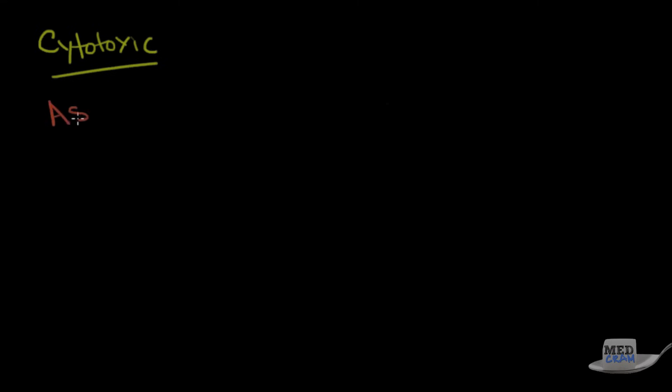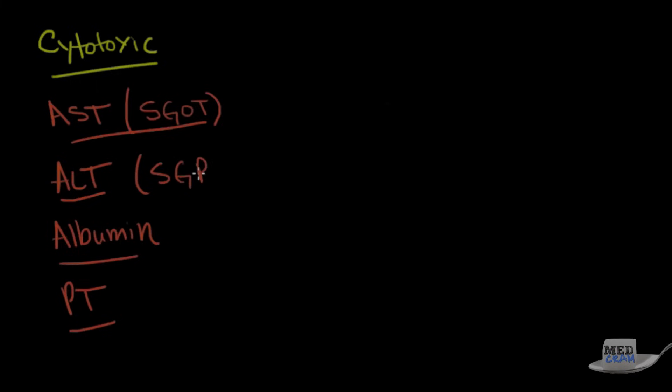Well, the first one is the AST. This is also known as the SGOT. This enzyme is actually made in the liver. In fact, it's not specific to the liver. It's in a number of cells, but you can see it in the liver. The other one is the ALT. Also albumin and the PT. By the way, the ALT is also known as the SGPT.